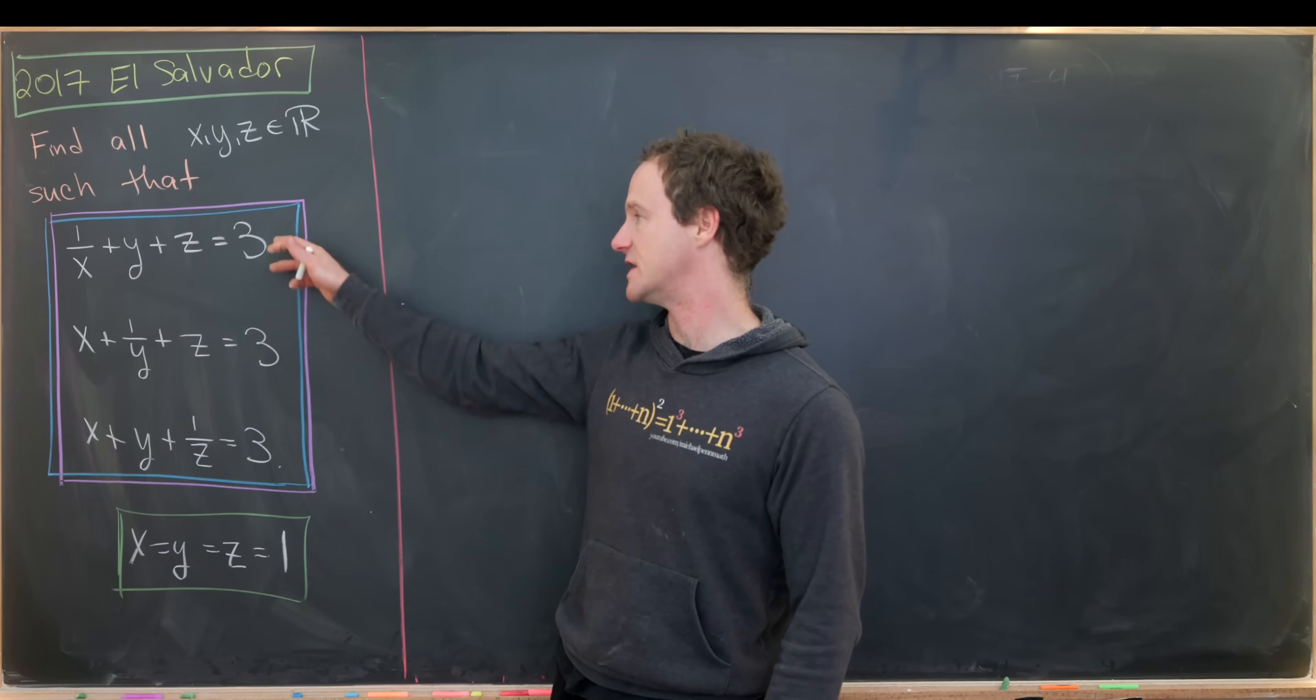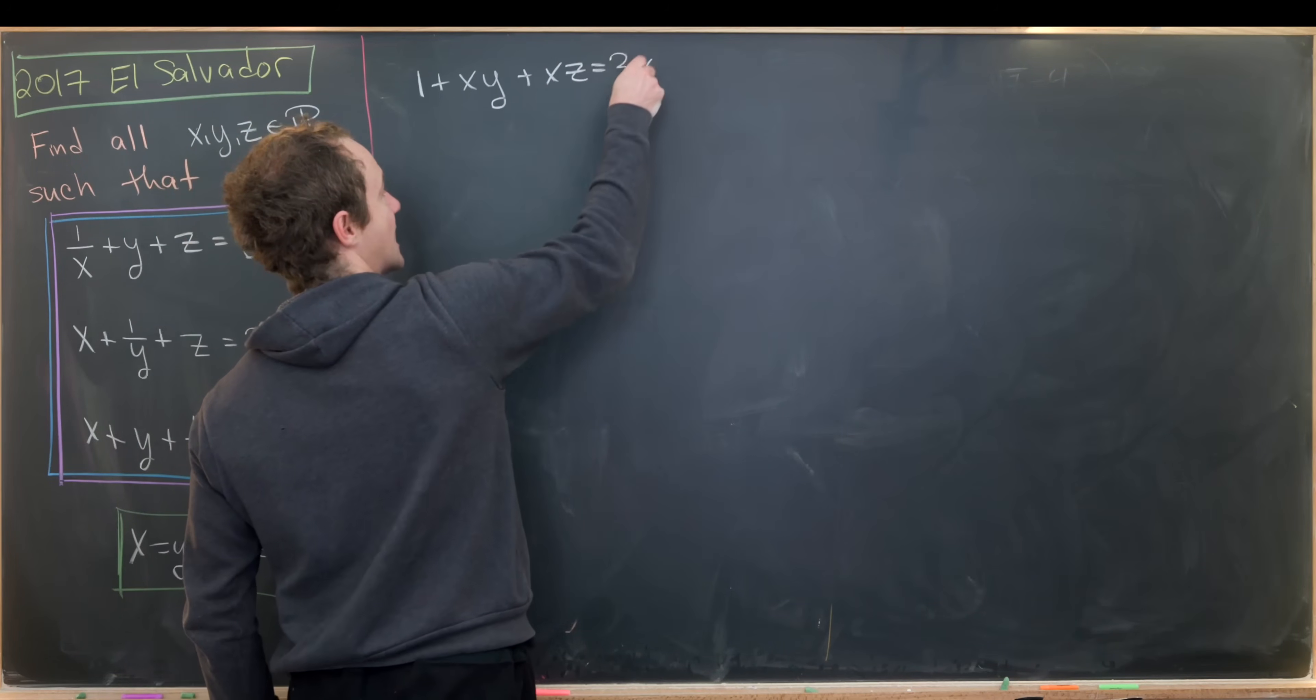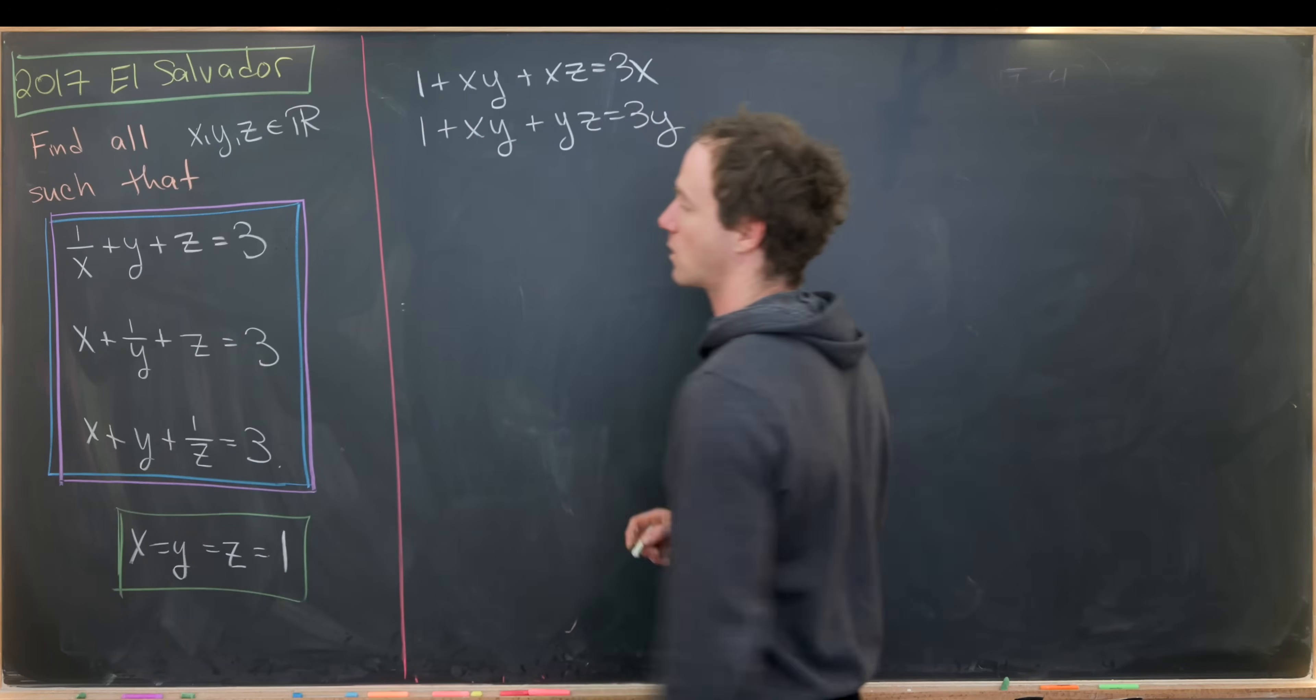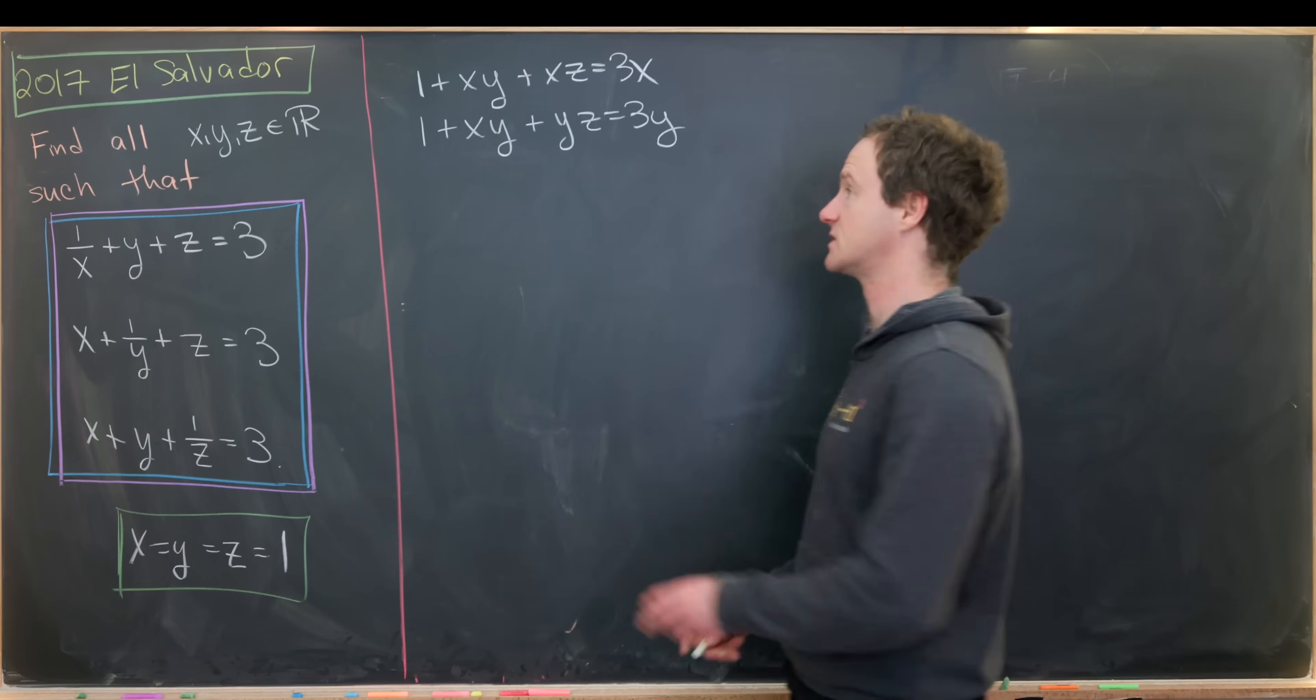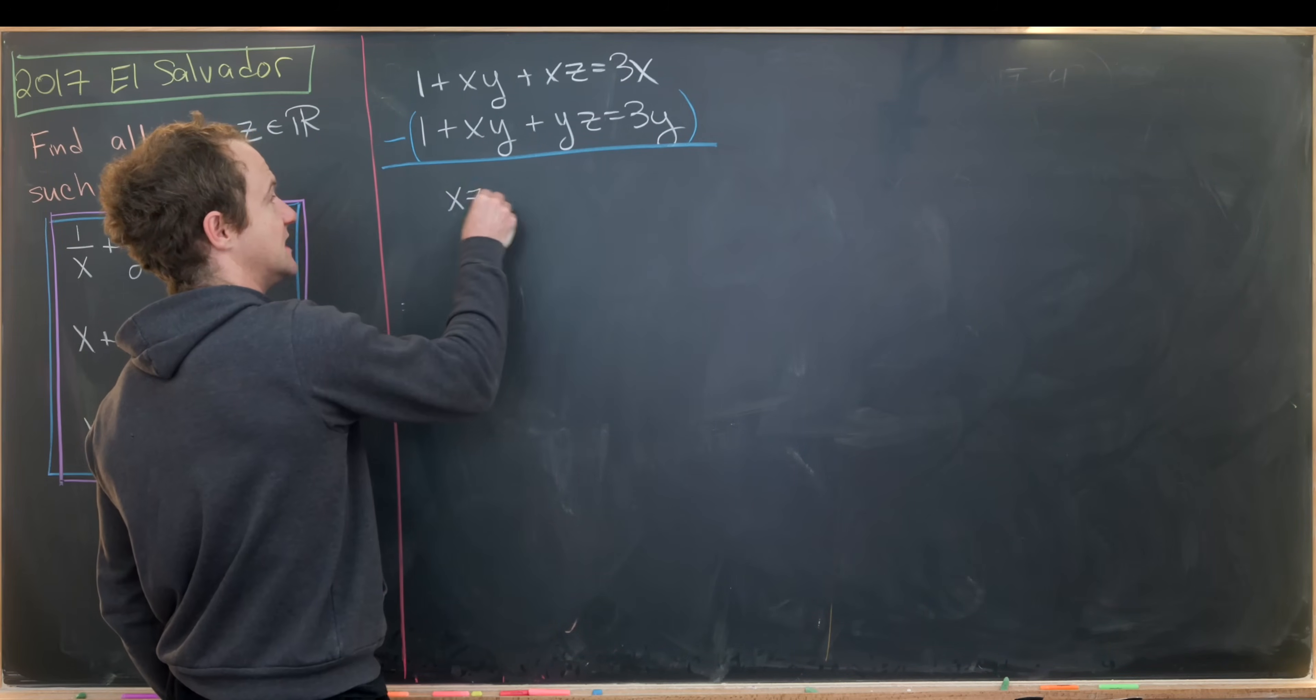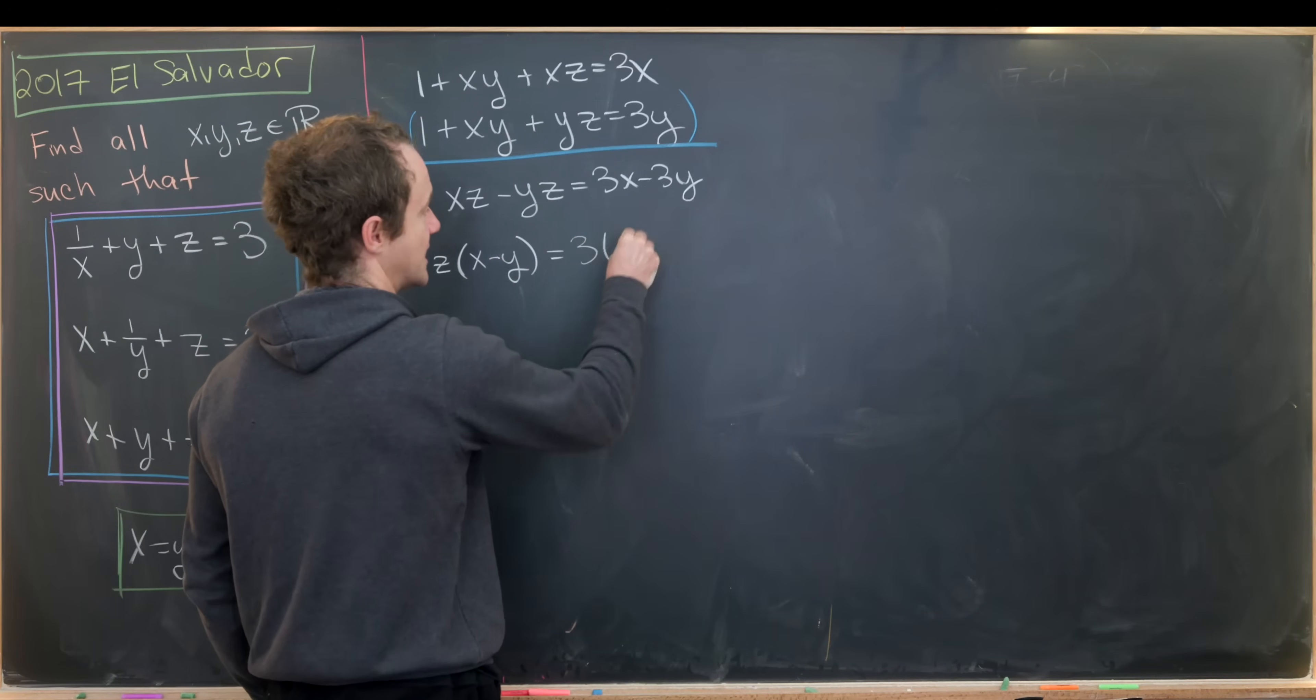We're going to start by taking these two equations and clearing the denominators. We'll multiply the first equation by x and the second equation by y. That will yield 1 plus xy plus xz equals 3x and 1 plus xy plus yz equals 3y. There are a lot of like terms among these equations, so we can group the entire second equation and subtract it from the first equation. That'll leave us with xz minus yz equals 3x minus 3y, which we can factor as z times x minus y equals 3 times x minus y.